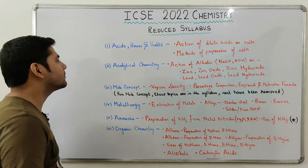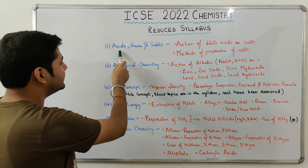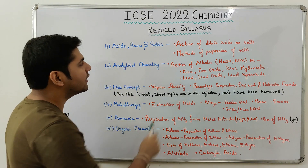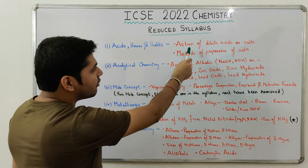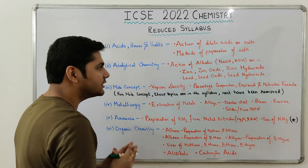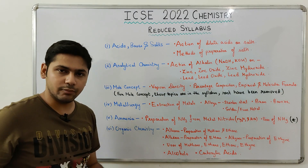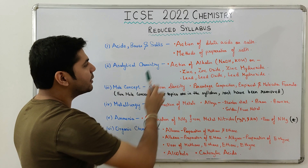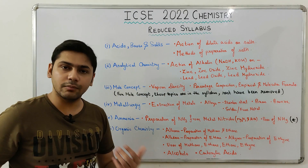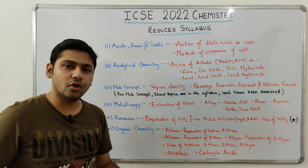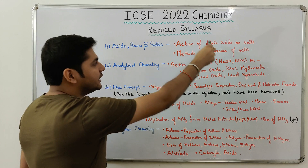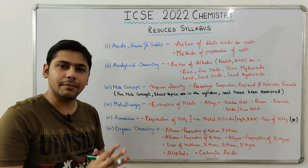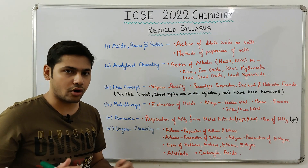First, from the chapter Acids, Bases and Salts: action of dilute acids on salts has been removed, and methods of preparation of salts have been removed. So you don't have to study these two sections from the chapter Acids, Bases and Salts.